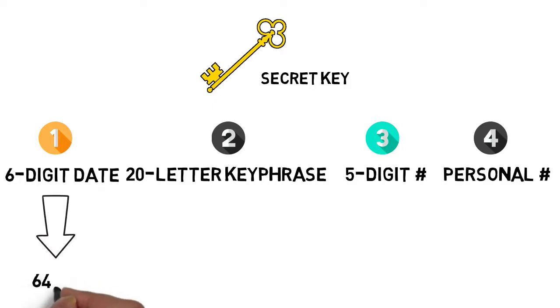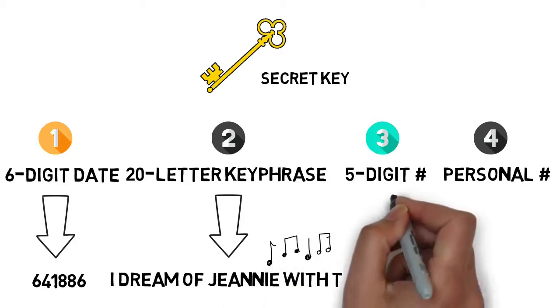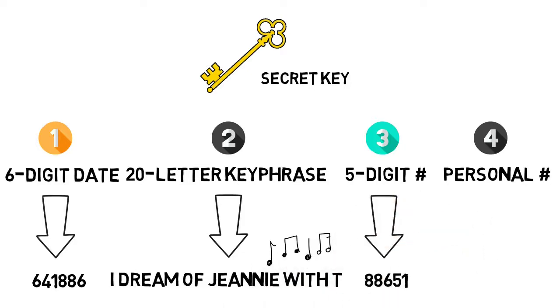In our example, we're going to use June 4, 1886 as our date, I Dream of Genie with T as our key phrase, 88651 as our random indicator group, and 13 as our agent's personal number. These four elements are going to help us create the straddling checkerboard that we're going to use for encryption.